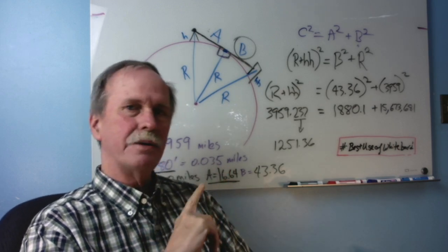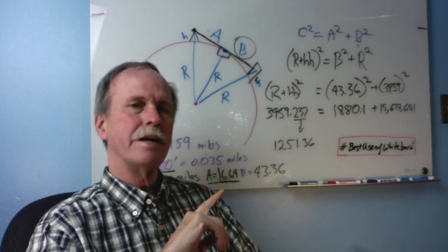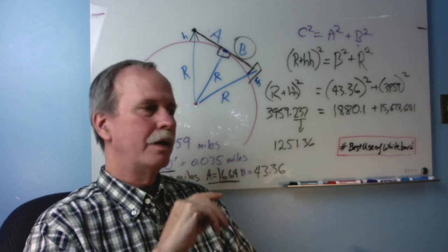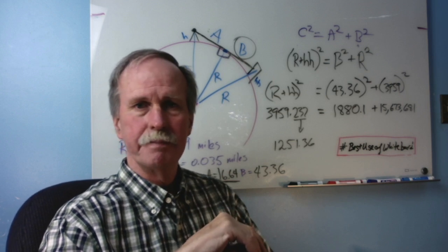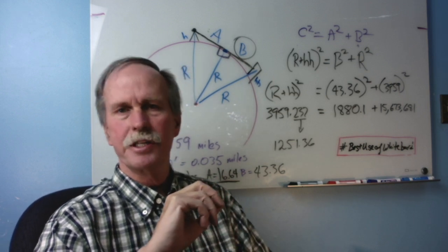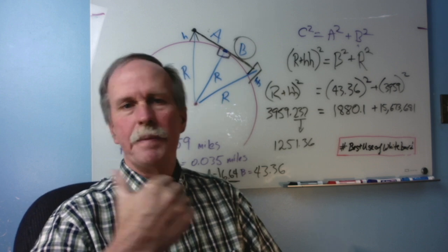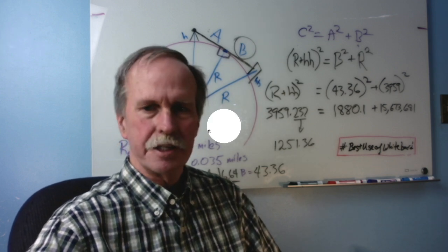Now, how do you fix that to deal with normal refraction in our atmosphere? Well, that's where this seven over six R comes into play. Let's go back to the curve calculator and have a look at something.